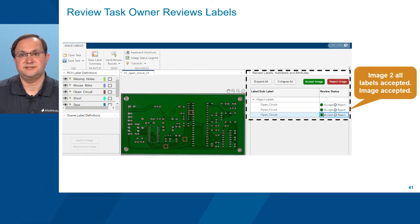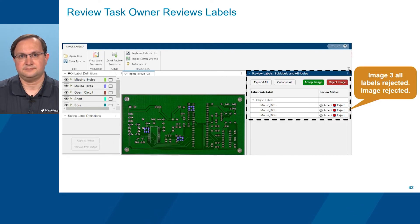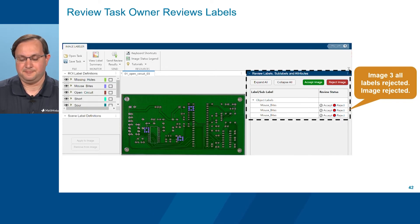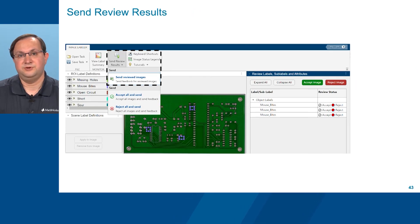The review task owner moves on to the second image and its three object labels — all labels are accepted and the image itself is accepted. The review task owner then proceeds to the third mislabeled image and its three misidentified object labels. All labels are rejected using the Reject buttons under the Review Status column of the Review Labels, Sublabels, and Attributes pane, and the image itself is rejected using the Reject Image button. When finished, the review task owner sends the review results using the Send Review Results icon.